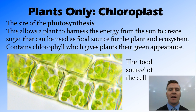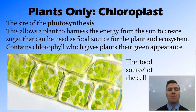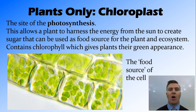Another organelle only found in plants is the chloroplast. Similar to mitochondria, an important chemical reaction occurs here — in this case, photosynthesis, which is how plants harness energy from the sun and turn it into sugar, which they can use as a food source, and importantly, which we can use as a food source if we eat plants or something that ate a plant. Chloroplasts have a special pigment called chlorophyll that allows photosynthesis to occur, and that's what gives plants their green colour. This is the food factory of the cell, and remember — only in plants.